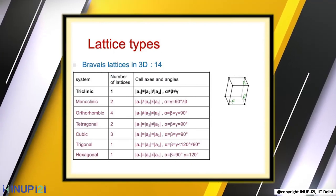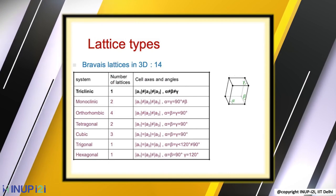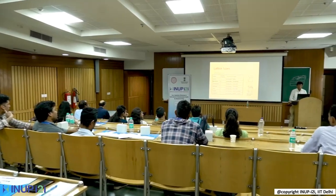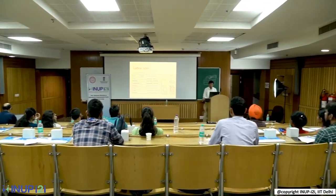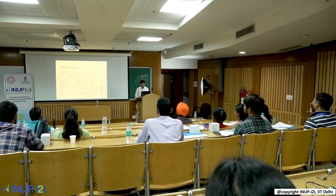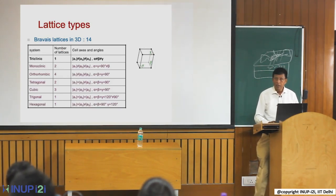Depending on the lattice parameters a1, a2, a3 and the angles alpha, beta, gamma, the material can have forms such as triclinic, monoclinic, orthorhombic, tetragonal, or cubic. Within those, there are further variants — for example, in orthorhombic you can have base-centered, body-centered, or face-centered structures. Understanding this is very important because the XRD peak positions and intensities depend on how atoms are arranged in the unit cell.